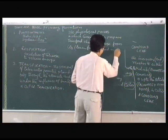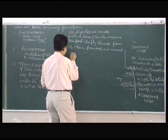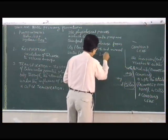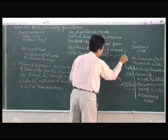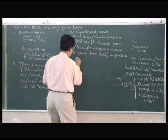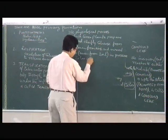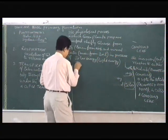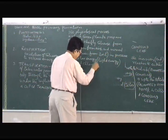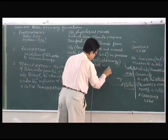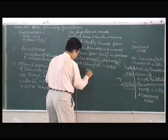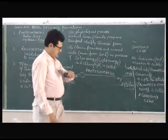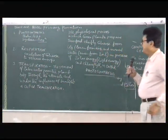The physiological process in which green plants use mineral water taken from the soil in the presence of solar energy, light energy, and chlorophyll is called photosynthesis. So with this, we conclude today. We will continue in the next period.